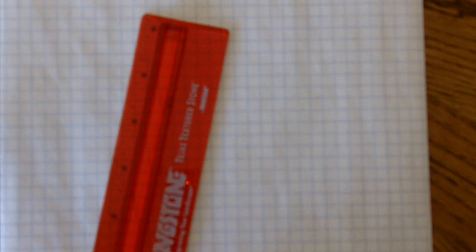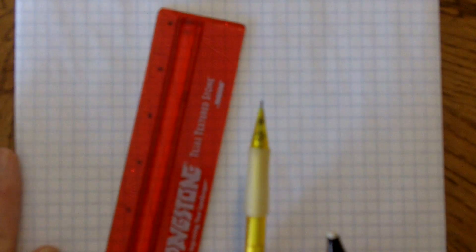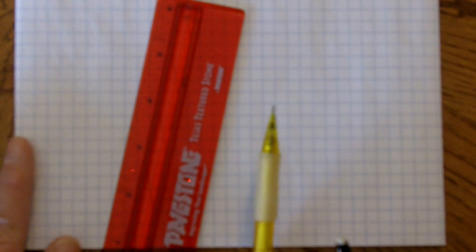First I have a ruler, a sharp pencil—I really like these ever sharps because you don't have to run to the pencil sharpener all the time—and plain graph paper.